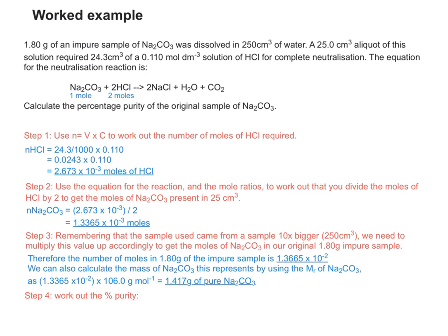And therefore we can calculate the mass of pure Na2CO3 this represents by using the MR of Na2CO3, which is 106 grams per mole. So that gives us 1.417 grams of pure Na2CO3 present in our 1.8 gram sample. So now it's just a question of changing that into a percentage: 1.417 / 1.800 x 100 = 78.7%.